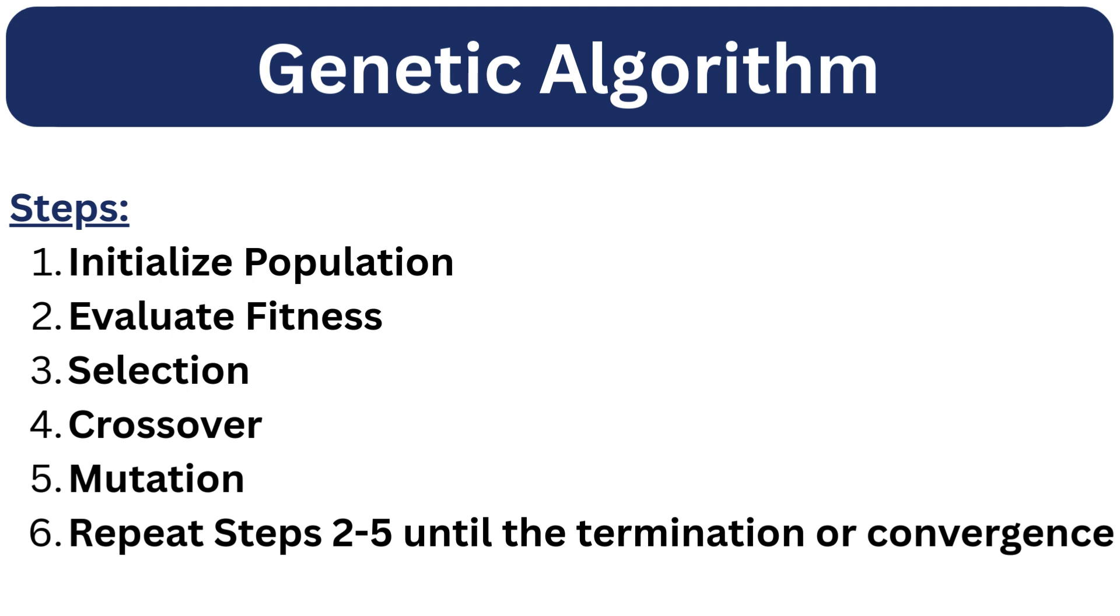Now let's go step by step through how genetic algorithms work. We start with a set of randomly generated solutions called initial population. Step 2 is to evaluate the fitness. Each chromosome is scored using the fitness function. Next step is selection. The best solutions are chosen for reproduction, often using methods like roulette wheel or tournament selection. Next is crossover. The selected parents combine their genes to create new offspring solutions.